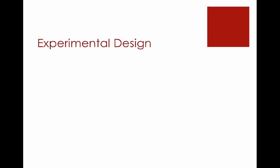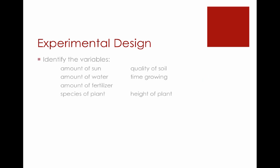First thing we're going to want to do is take some time and identify the variables that we have present. There can be lots of different things: the amount of sun, the amount of water, fertilizer, maybe we use different species of plants, quality of soil, time growing, etc. In your particular experiment, you'll choose some factors that you think might be of interest, and then you'll go with that.